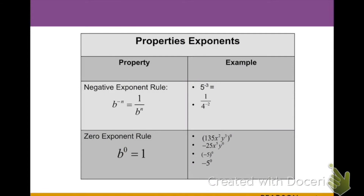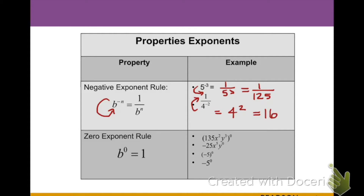The first property we're going to talk about is the negative exponent rule. If we have a base b raised to a negative n exponent, all we need to do to get rid of that negative exponent is move it to its reciprocal place in the fraction. So 5 to the negative 3 becomes 1 over 5 to the third power, which simplifies to 1 over 125.